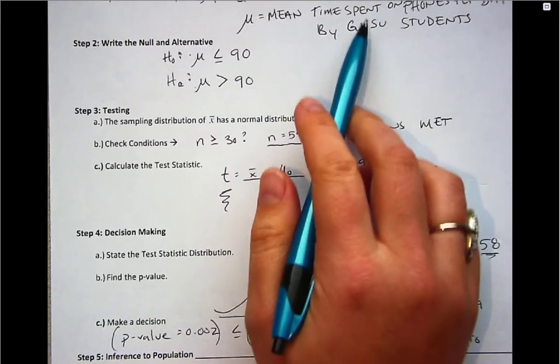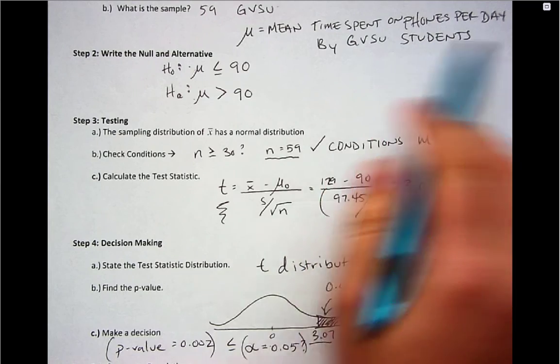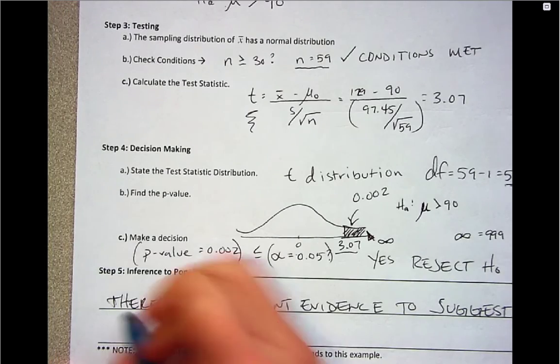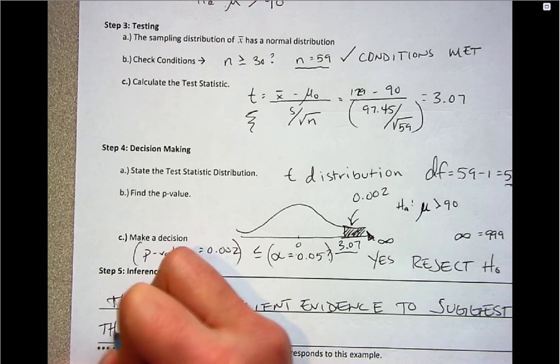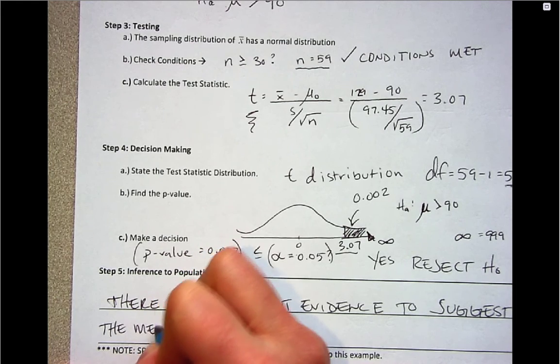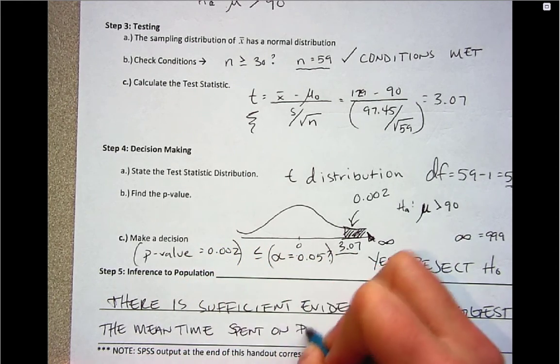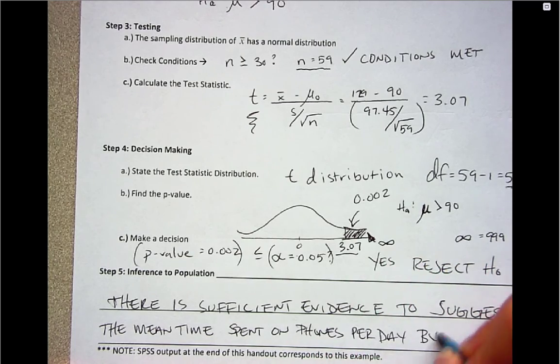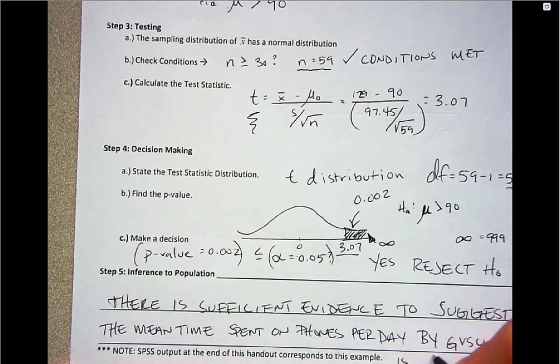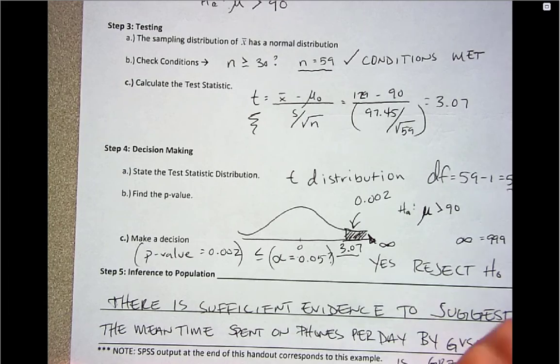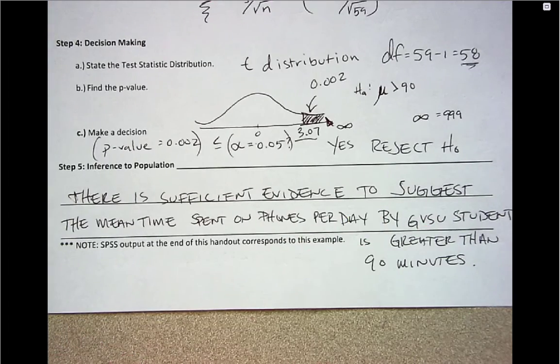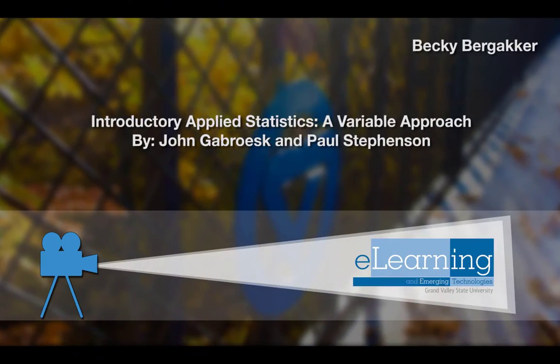Mean time spent on phones per day by GVSU students. So that is our right tail test for a hypothesis test for one population mean.